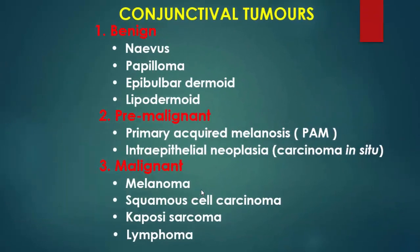Conjunctival tumor classification can include benign tumors including nevus, papilloma, epibulbar dermoid, and lipodermoid. Pre-malignant lesions include primary acquired melanosis and intraepithelial neoplasia, also called carcinoma in situ. Malignant conjunctival tumors include melanoma, squamous cell carcinoma, Kaposi sarcoma, and lymphoma.